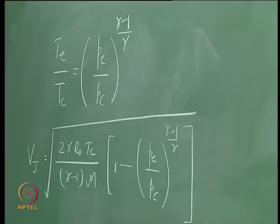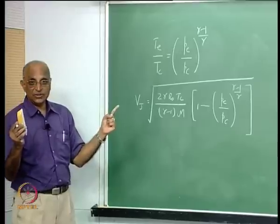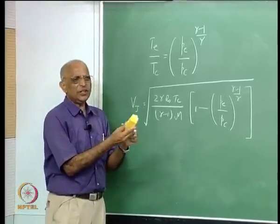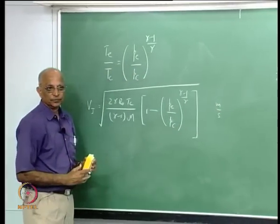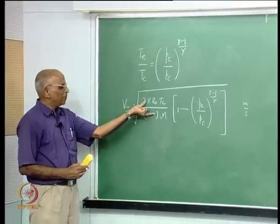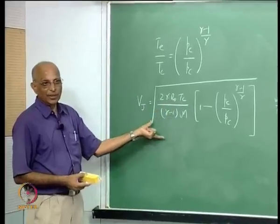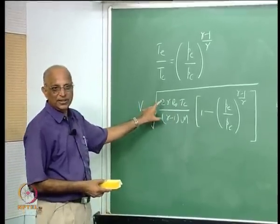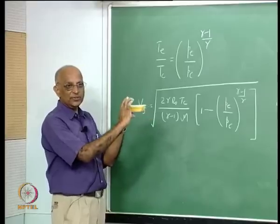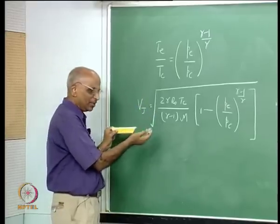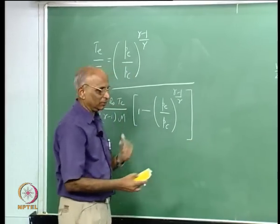We have been able to derive the jet velocity equation. The assumptions were: perfect gas, adiabatic vent, reversible (slow) flow — giving isentropic flow. That gives us V_j in meters per second. The derivation is a simple algebraic manipulation. We must keep in mind these two assumptions — adiabatic and reversible — because I will try to relax them as I go along.